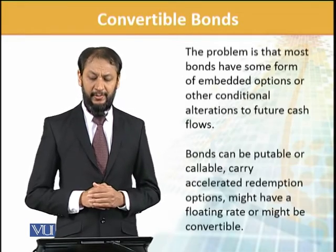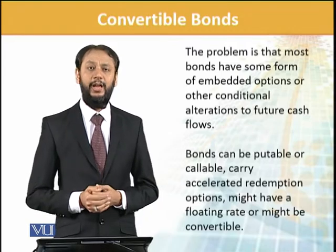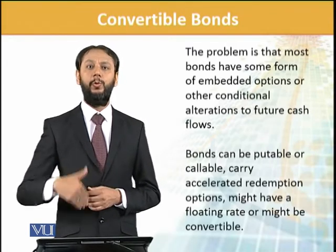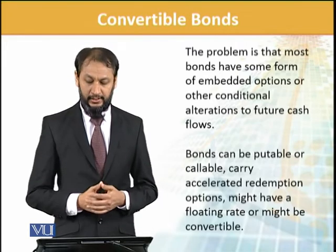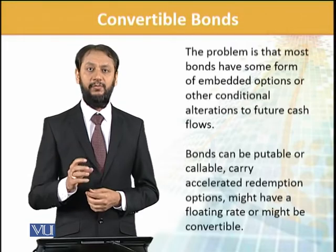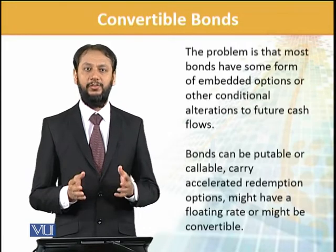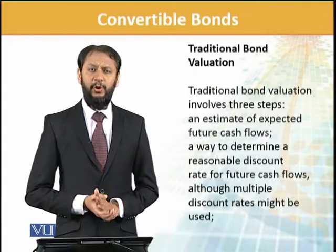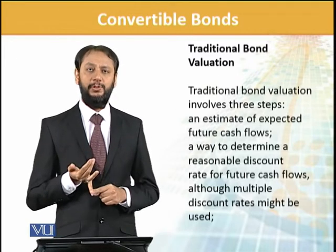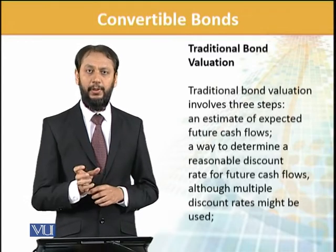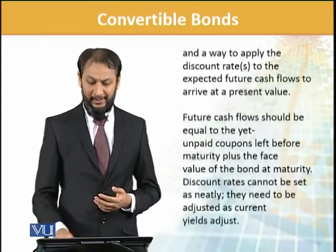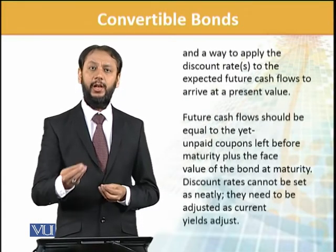The problem is that most bonds have some embedded option or other conditional alternative to cash. When embedded options are present, we need to factor them in — some increase the bond's value, some decrease it. Bonds can be putable, callable, floating, or convertible. Traditional bond valuation, as we know, is very simple but let's recall it: it involves three steps — estimate future expected cash flows, determine the appropriate discount rate, and discount the cash flows to get the bond's value.